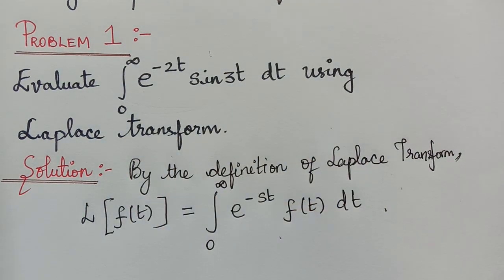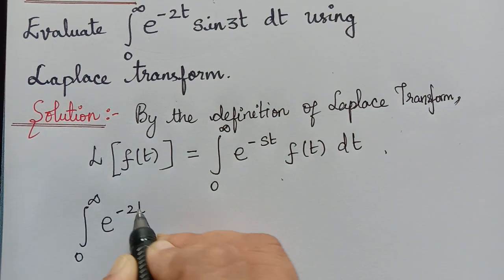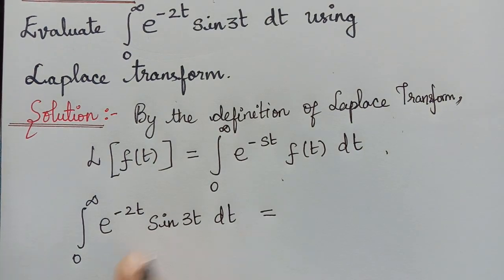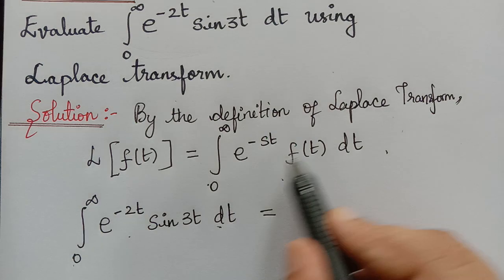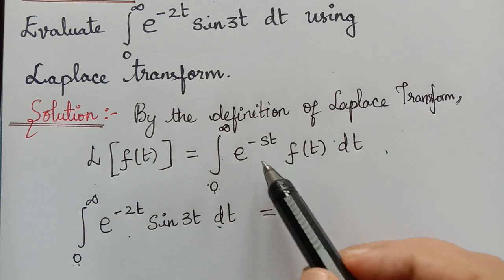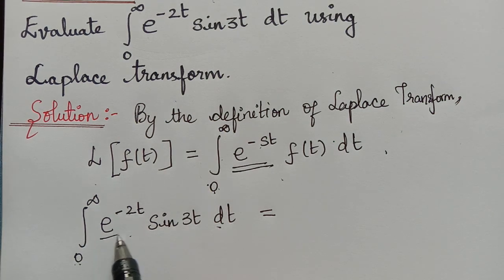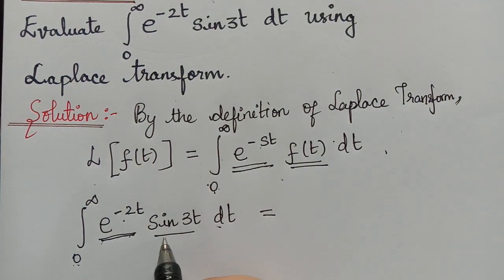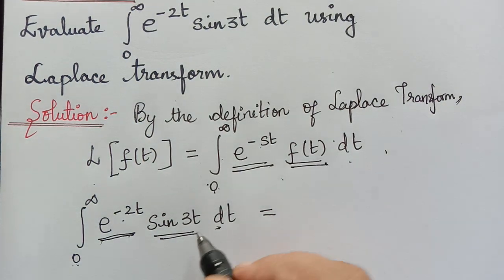Now in the given integral, we have the integral from 0 to infinity of e to the power negative 2t times sin 3t dt. We compare this with the Laplace transform definition. The limits are the same, 0 to infinity. Here we have e to the power negative st, so instead of s, we have the value 2. And instead of f of t, we have sin 3t. So the value of f of t is equal to sin 3t.